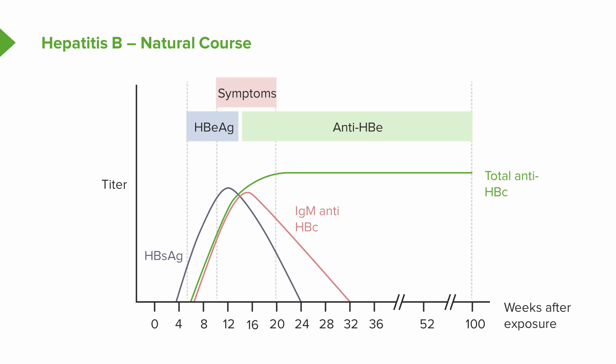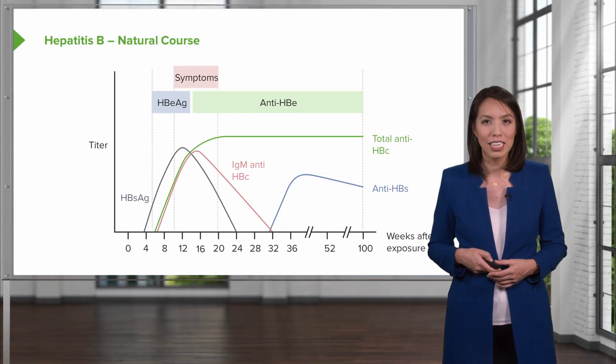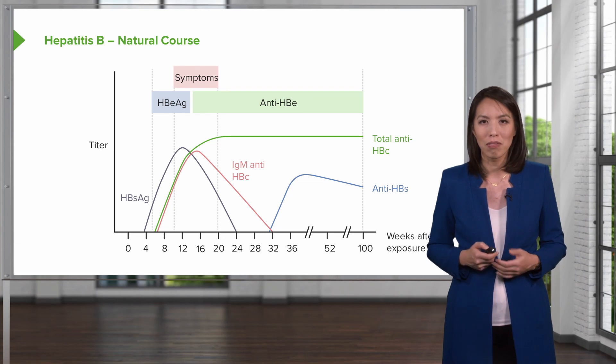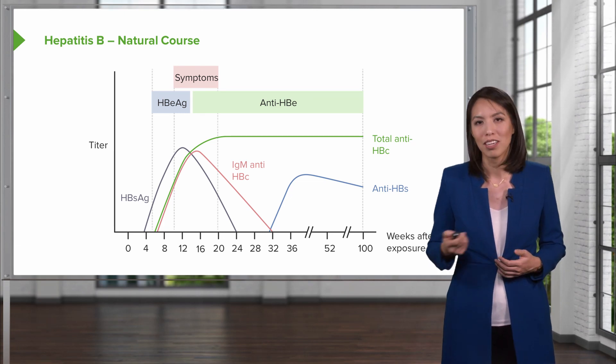After the initial acute infection, the core IgM antibody and the surface antigen will resolve. Then at about week 32 after exposure, the person will develop a surface antibody, indicating they have built up immunity. Note there is a small period between weeks 24 and 32 where the IgM core antibody may stay positive — the pink line — which creates a particular clinical picture that can be very confusing.